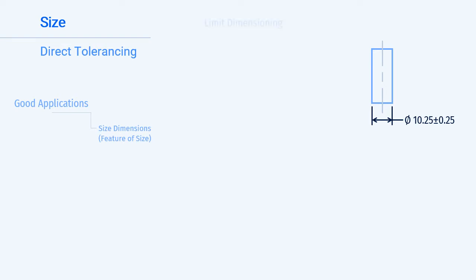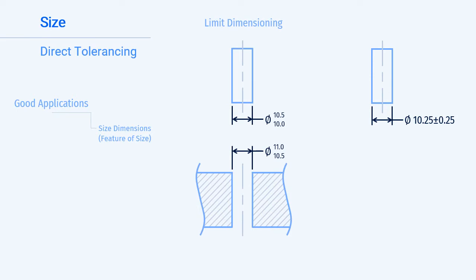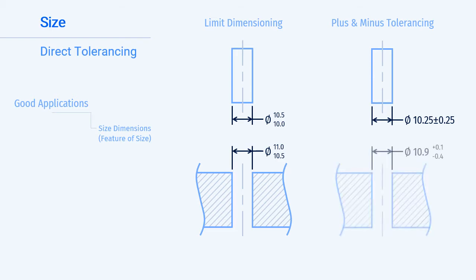There are two types of direct tolerancing. Limit dimensioning defines the upper and lower limits of a feature. Plus or minus tolerancing defines the nominal value and the amount of tolerance it can vary. This can either be equally distributed in both positive and negative directions, as shown with the shaft on the right, or unequally distributed with more tolerance in either the positive or negative direction, as shown in the hole on the right. The most common method is the equally distributed tolerance.